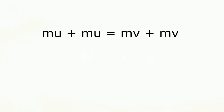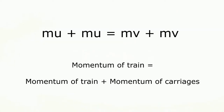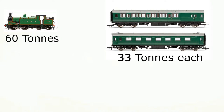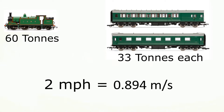In an ideal situation, ignoring resistances and other aspects that will alter the final result, the equation will be something like this. Considering that the train's weight is 60 tonnes, the five carriages weigh 33 tonnes each, and the maximum coupling speed is 2 miles per hour, we can use the momentum equation to calculate the momentum before and after.